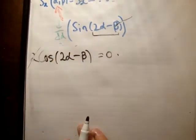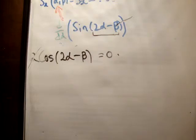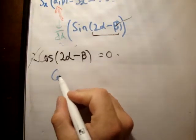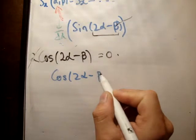And we want to set this to zero. Once again, 2 is a constant, so we can get rid of that. And you're left with the following, with cos 2 alpha minus beta, being equal to zero.